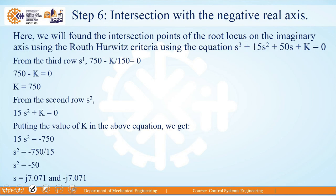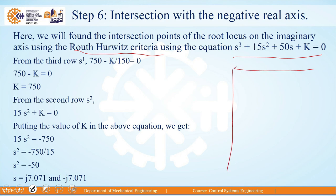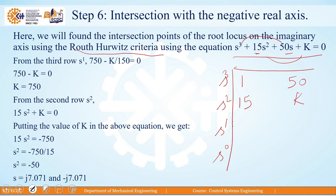The next step finds the intersection with the imaginary axis using the Routh-Hurwitz criterion. The characteristic equation is s³ + 15s² + 50s + K = 0. Preparing the Routh table: first row has coefficients 1 and 50 (for s³), second row has 15 and K (for s²). The s¹ row element is (750−K)/150, and the s⁰ row is K.